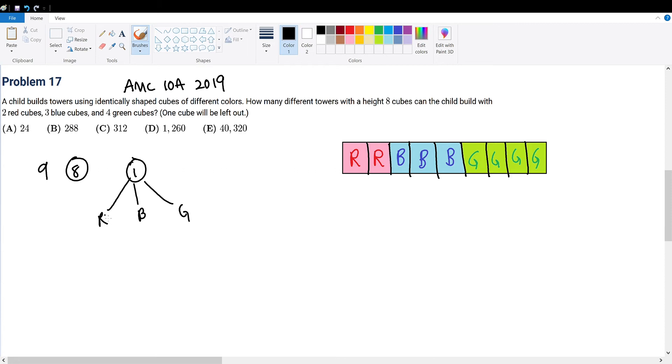Since each color is distinct from another, meaning that if we exclude one cube, it will not affect the possible outcome of the rest, this is casework. We have 3 separate cases: if the excluded cube is red, blue, or green.